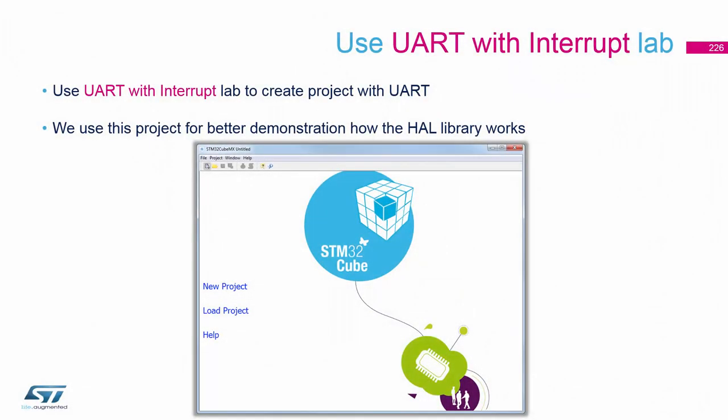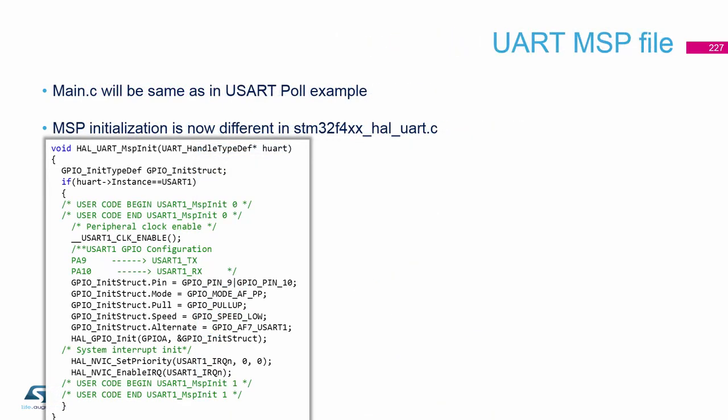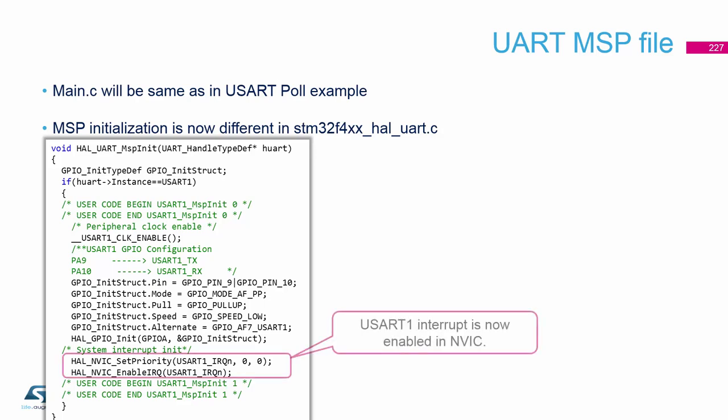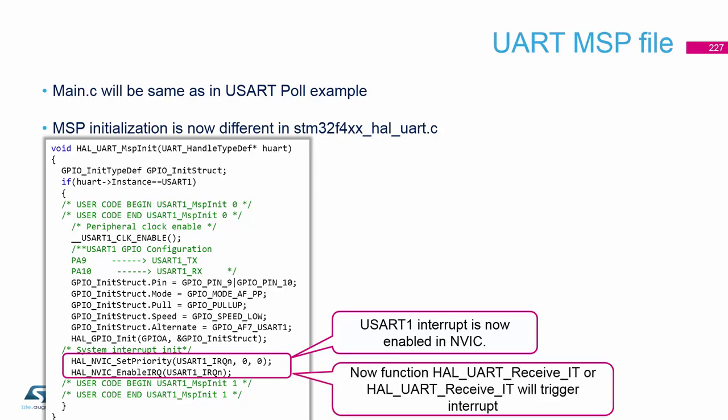In the interrupt lab, the structure will always be the same. We need the extract from the MSP file where we initialize the interrupts. This is necessary — if the interrupts are missing, you cannot work with them. As you remember, we first need to enable the interrupt on the peripheral and also in the Nested Vector Interrupt Controller (NVIC).